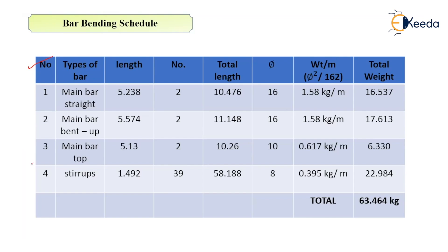This is a format of BBS. As you can see here, it will have: number, type of bar, length of bar, number of that particular bar, then total length. For the type of bar — for example, in a beam there is a main bar, which may be straight or bent up, then there will be a top anchor bar, then stirrups will also be there. We have listed down various types of bars and the calculated lengths are entered into the bar bending schedule. Number of each type — how many straight bars, how many bent up bars — is also given. You can also show the shape of that particular bar; stirrups will have a certain shape, and main bars will also have a shape shown in the bar bending schedule table.